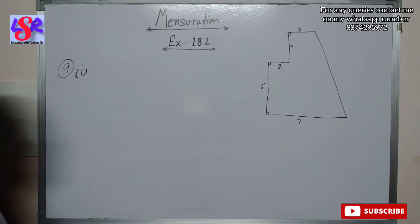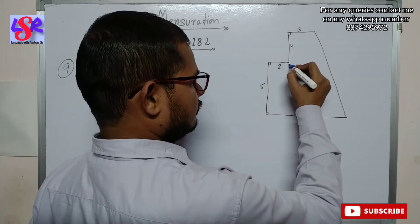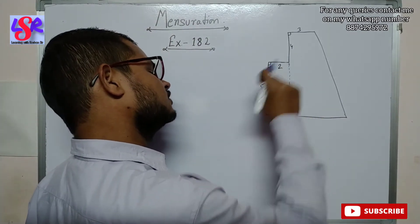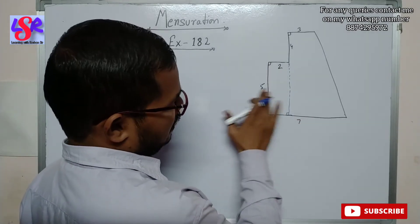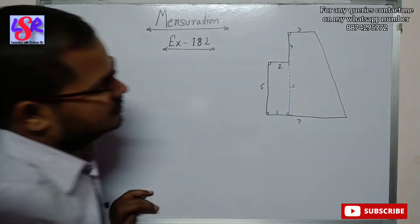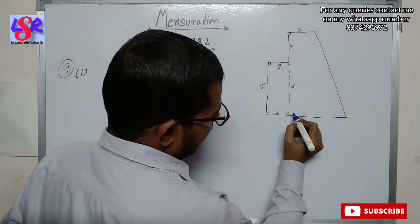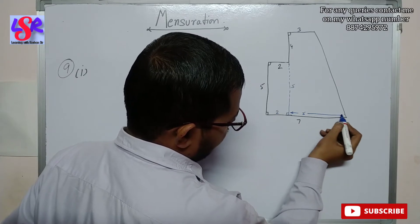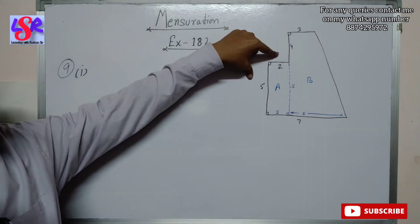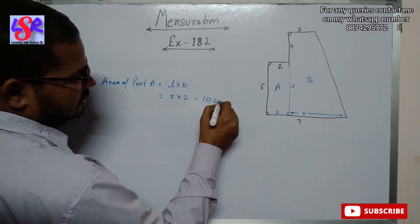Now let us do question number 9, first part. We have a figure and we need to find its area. We divide the figure into two parts by drawing a perpendicular line. Since we have 90 degrees, this forms a rectangle, and as the opposite sides of a rectangle are equal, we get 5 centimeters on the opposite side as well. The part A is a rectangle with area = L × B = 5 × 2 = 10 centimeters square.